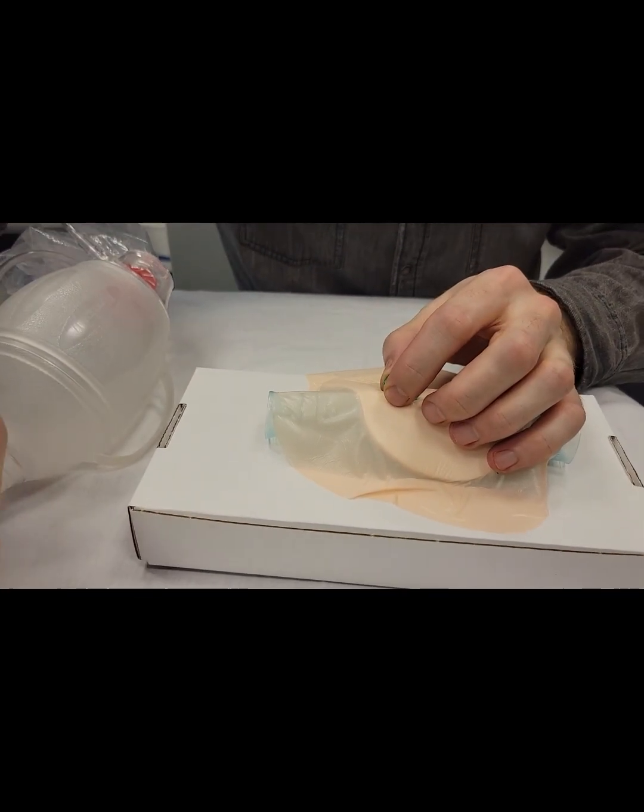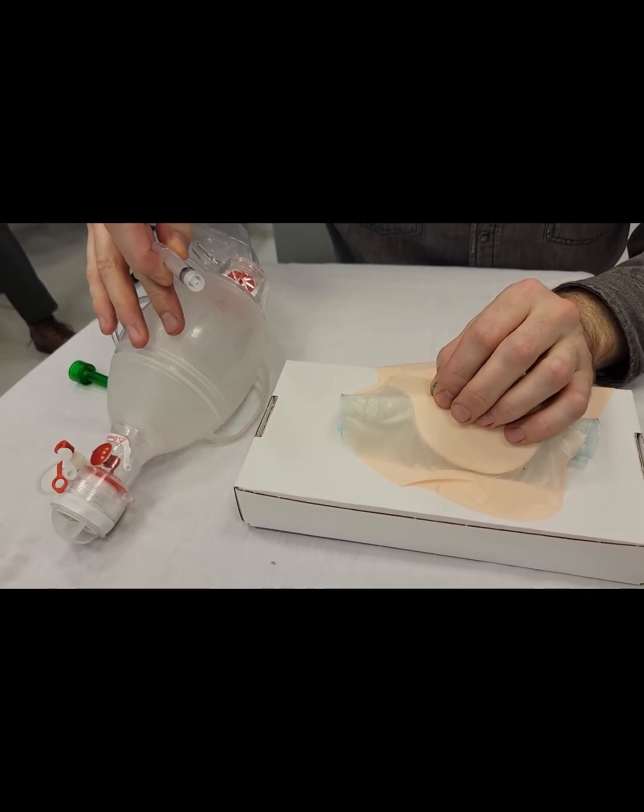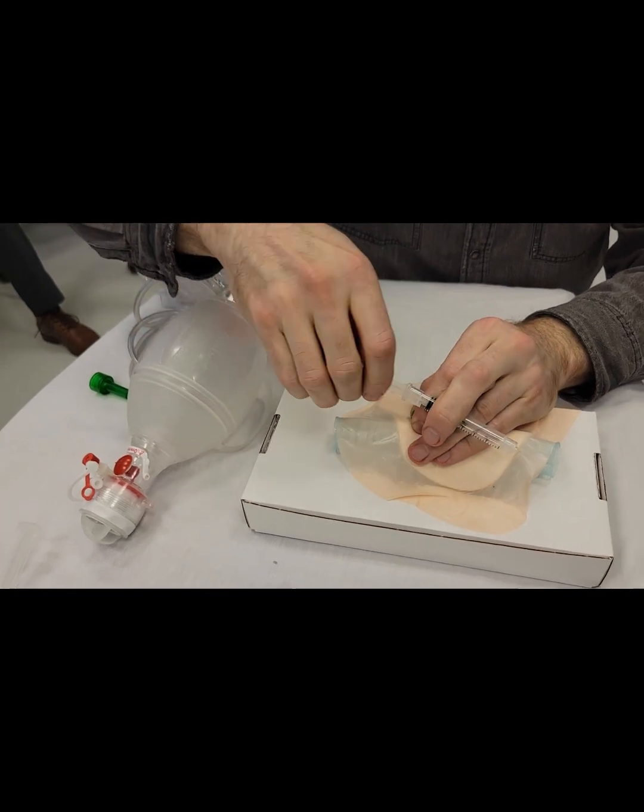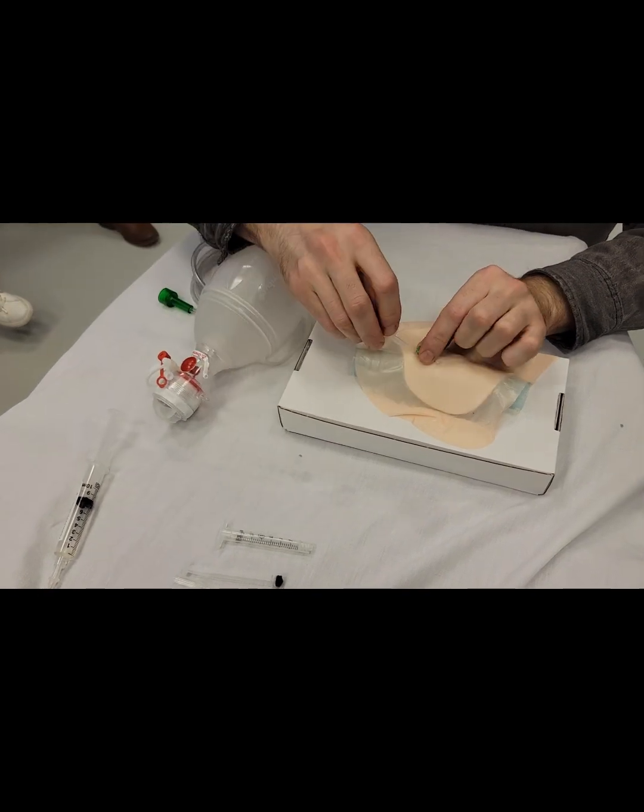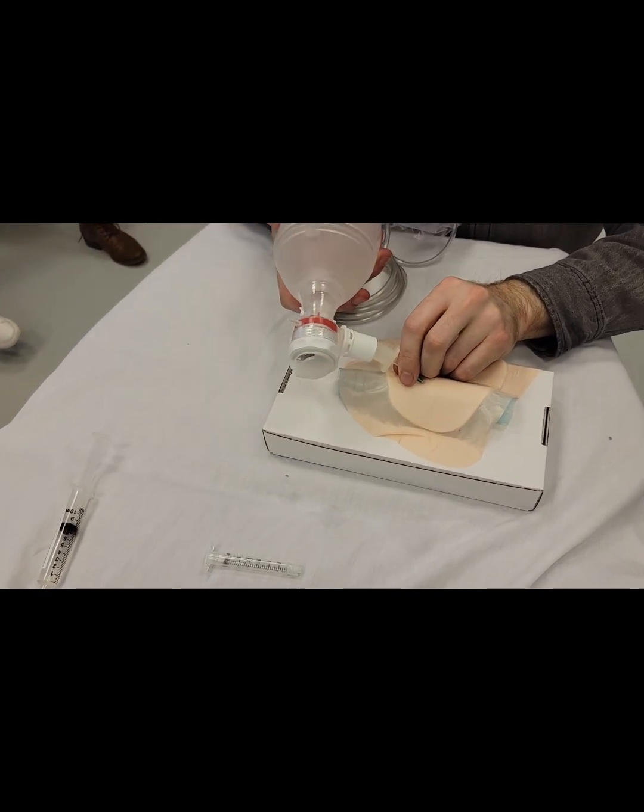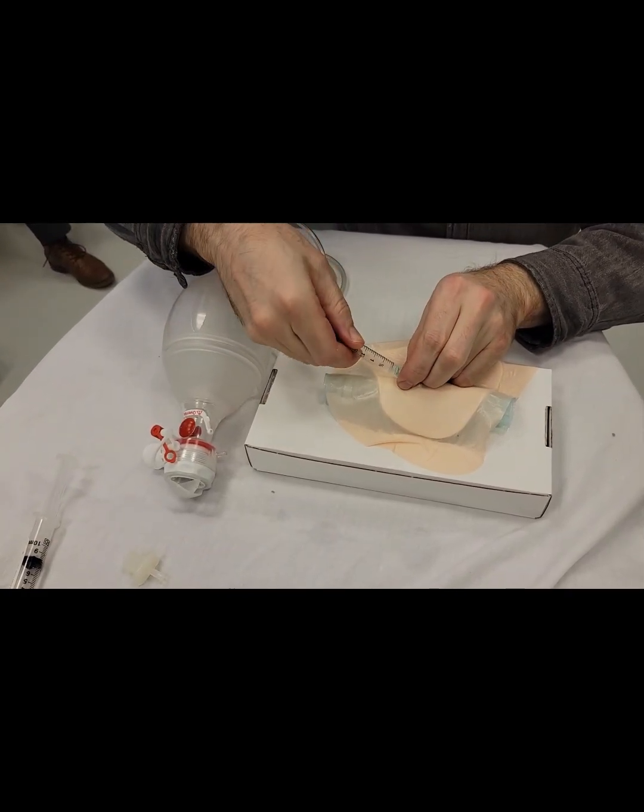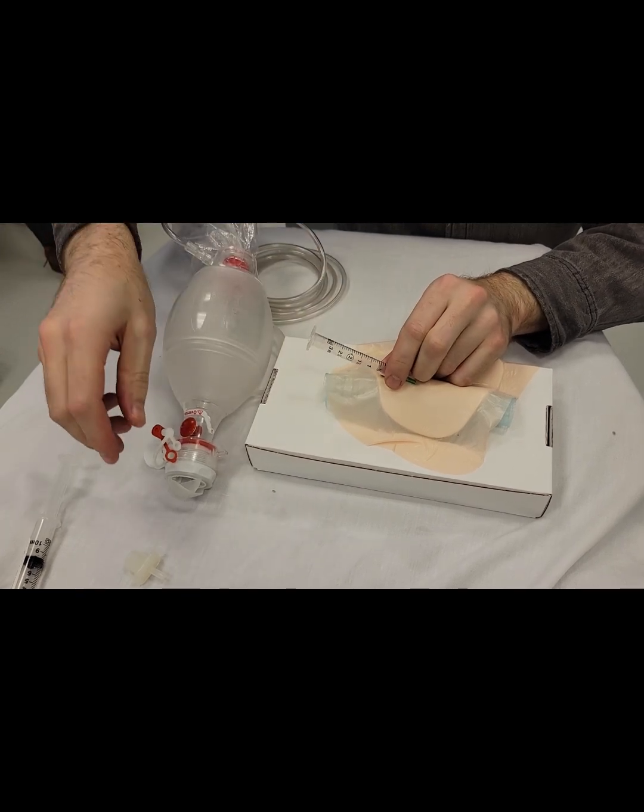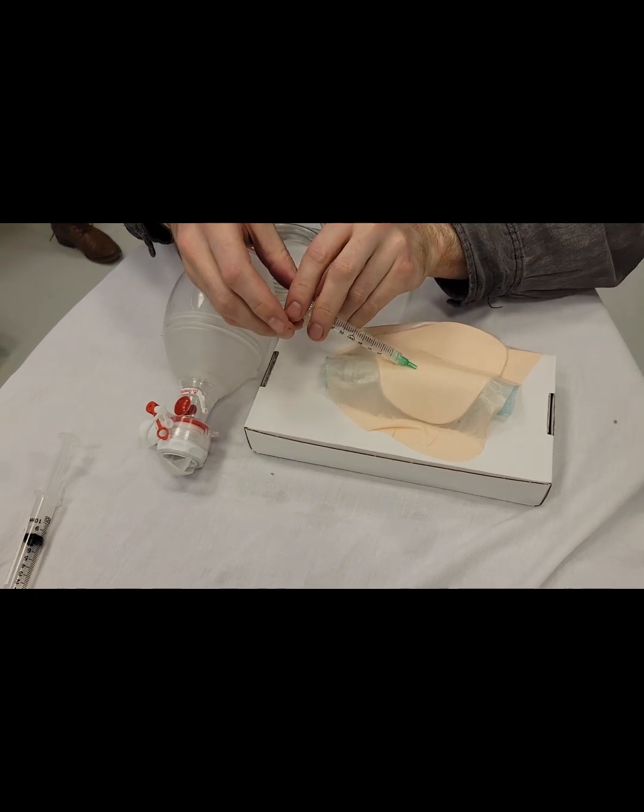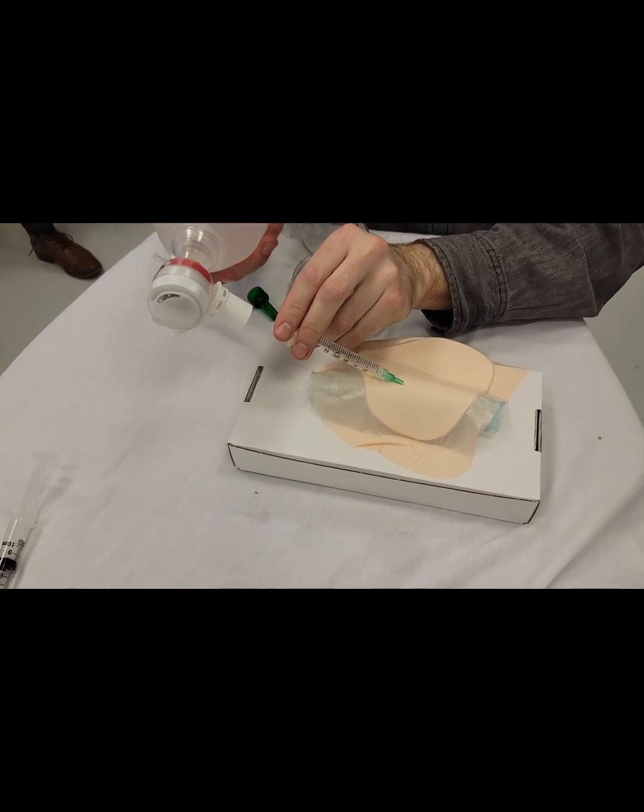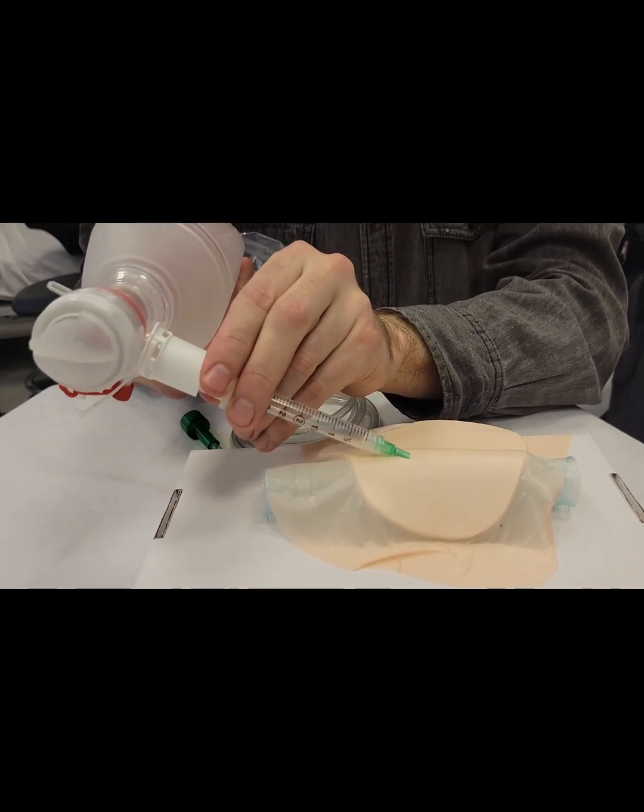At this point, you need to connect the angiocath to the BVM by way of either a 3.0 ET tube connector directly to the angiocath, and then from there to the BVM, or you can use the 3 millimeter syringe, and then you can take a 7.0 ET tube connector that fits into the 3 milliliter syringe and then connect to your Ambu bag, and then go ahead and ventilate from there.